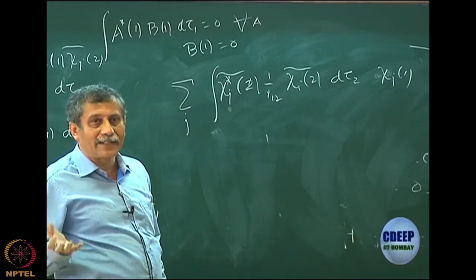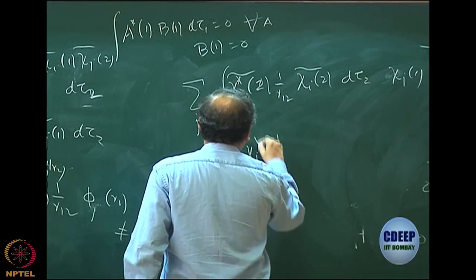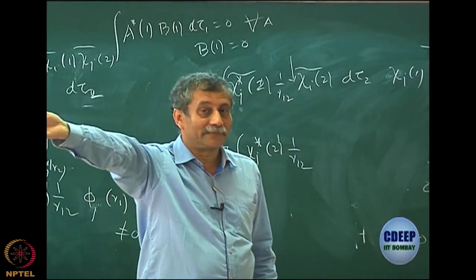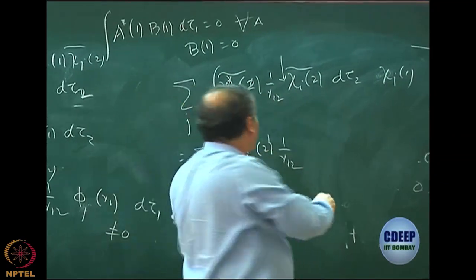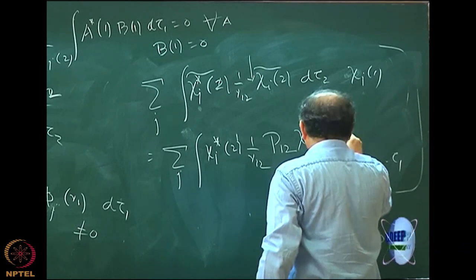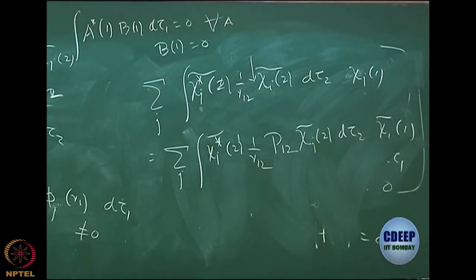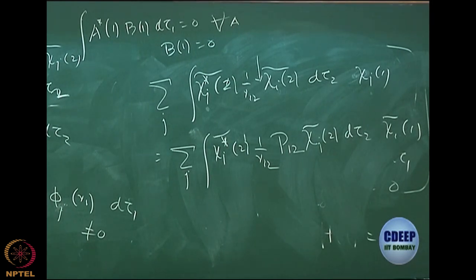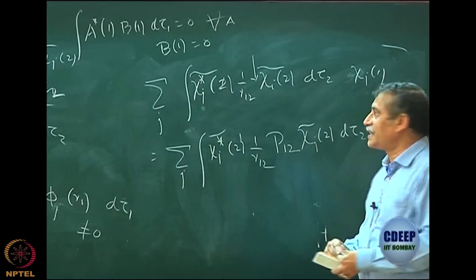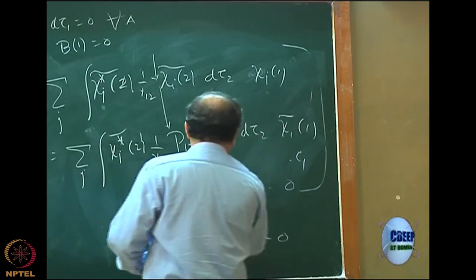What I will now do is strictly mathematical — you may even consider it cheating, but it is mathematical. I will write this as sum over j, chi i tilde 2, 1/r_12, and introduce between these an operator you are already aware of: the permutation operator P12. The permutation operator interchanges 1 and 2. I will write P12, and then the arguments have to be interchanged, so chi j tilde 2 will become chi j tilde 2, d tau 2, and this gives out chi i tilde 2. Perfect — I have no problem.